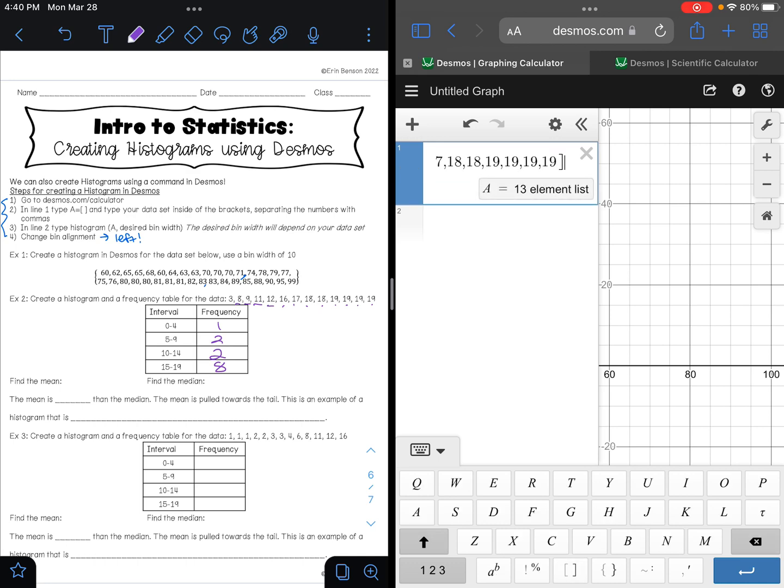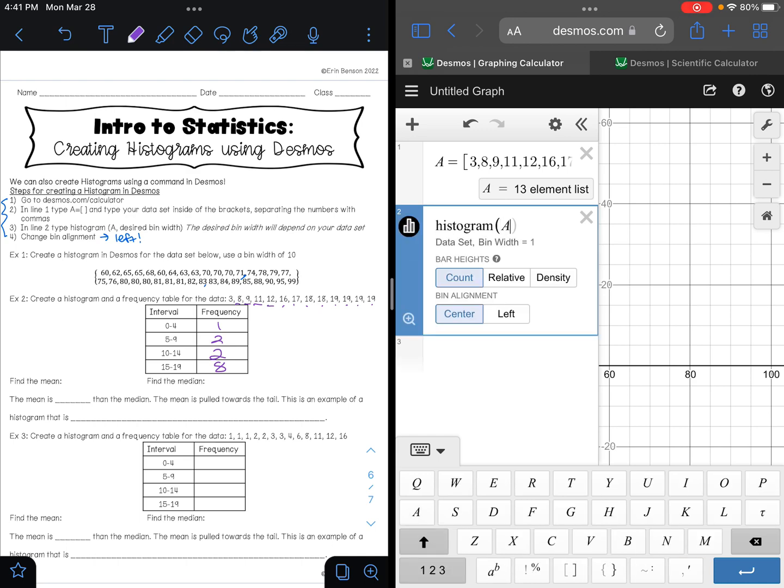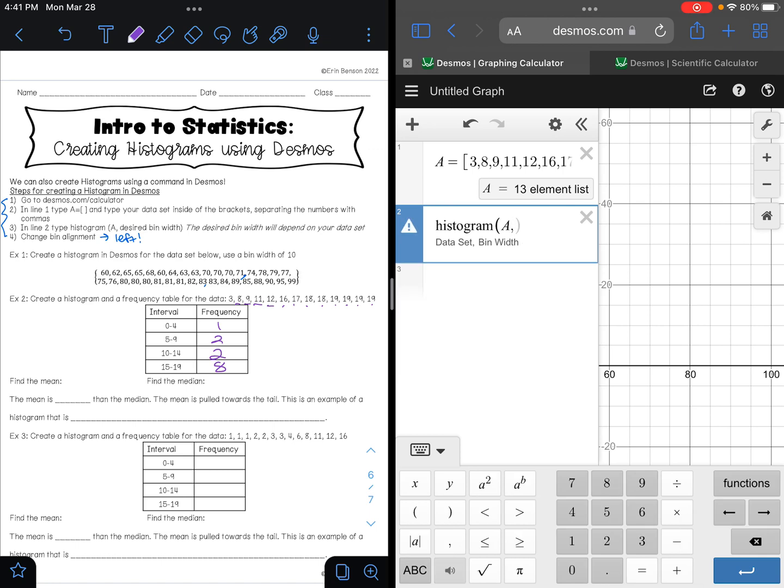Then in line 2 I'm going to type histogram, and we want to find the histogram of A. They tell us our intervals, so when we look at our intervals here, how big is that bin? How many numbers are between 0 and 4? Well let's count: 0, 1, 2, 3, 4, there's 5 numbers there. Between 5 and 9, that's 5 numbers. Between 10 and 14, that's 5 numbers. And 15, 16, 17, 18, 19, that's 5 numbers. So our bin width is 5. Remember you always want to change your bin alignment to left, and so here is my histogram.